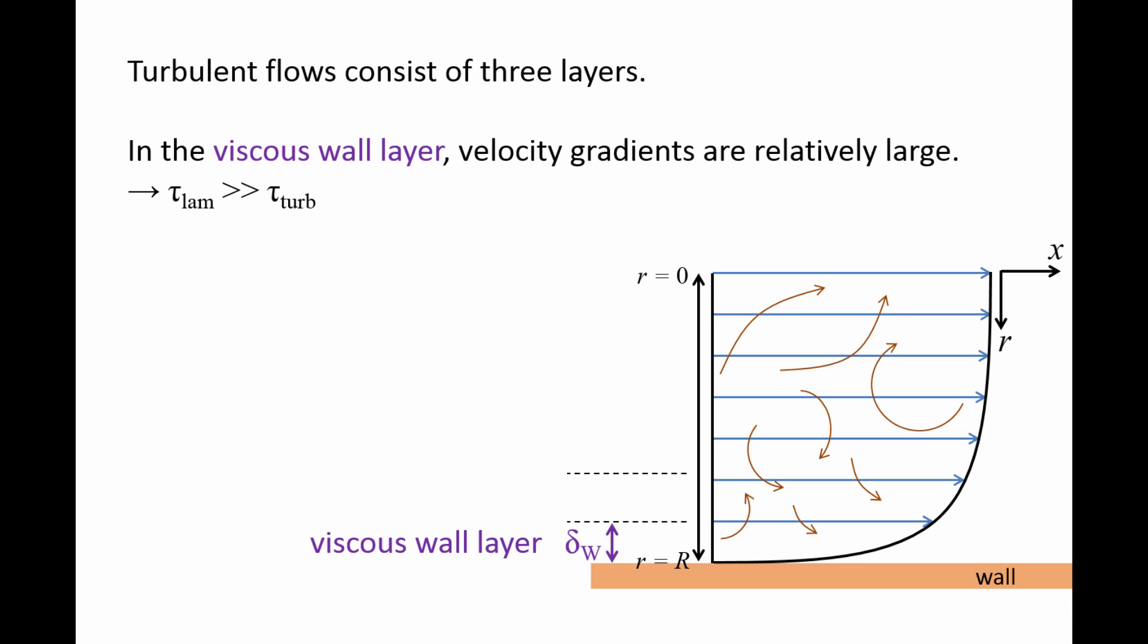The thickness of the viscous wall layer will be denoted by delta_W. The viscous wall layer is very thin. For example, if water flows through a 3-inch diameter pipe at an average speed of 10 feet per second, the viscous wall layer would only be a couple thousandths of an inch. The thickness of the wall layer is highly exaggerated in the image on the right.